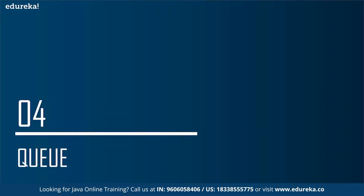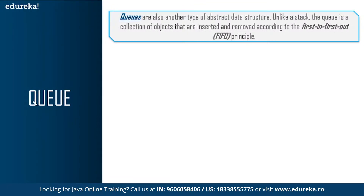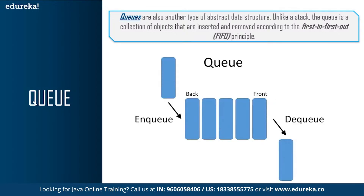Now talking about the next data structure, that is Queue. Queue is also another type of abstract data structure, and like a stack, the queue is a collection of objects that are inserted and removed according to the first-in-first-out principle. Elements can be inserted at any point of time, but only the element that has been in the queue the longest can be removed at any time. It has two ends: the front end and the rear end. In case of stack it is last-in-first-out; in case of queue it is first-in-first-out.